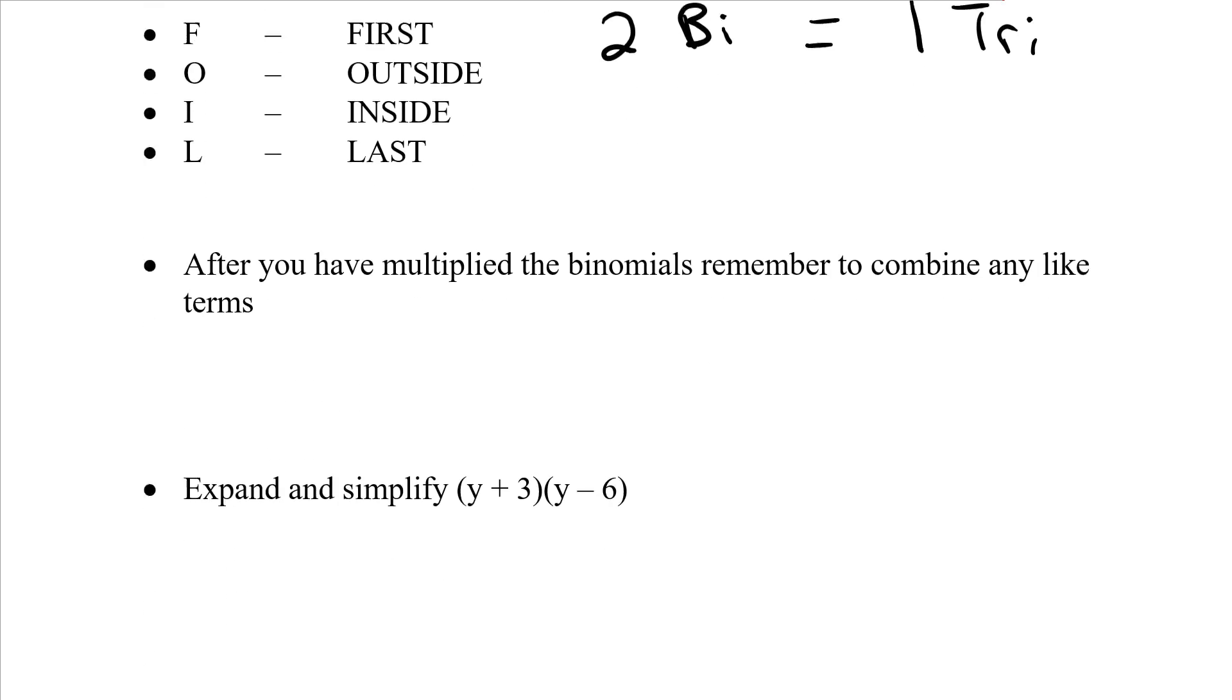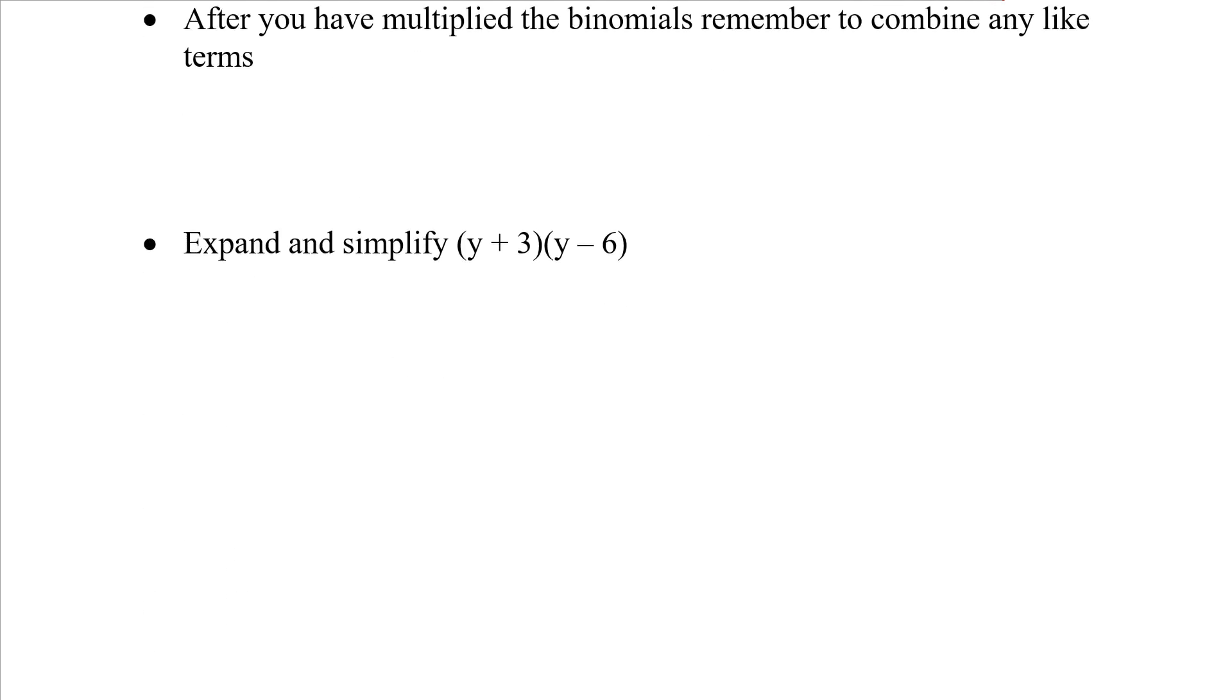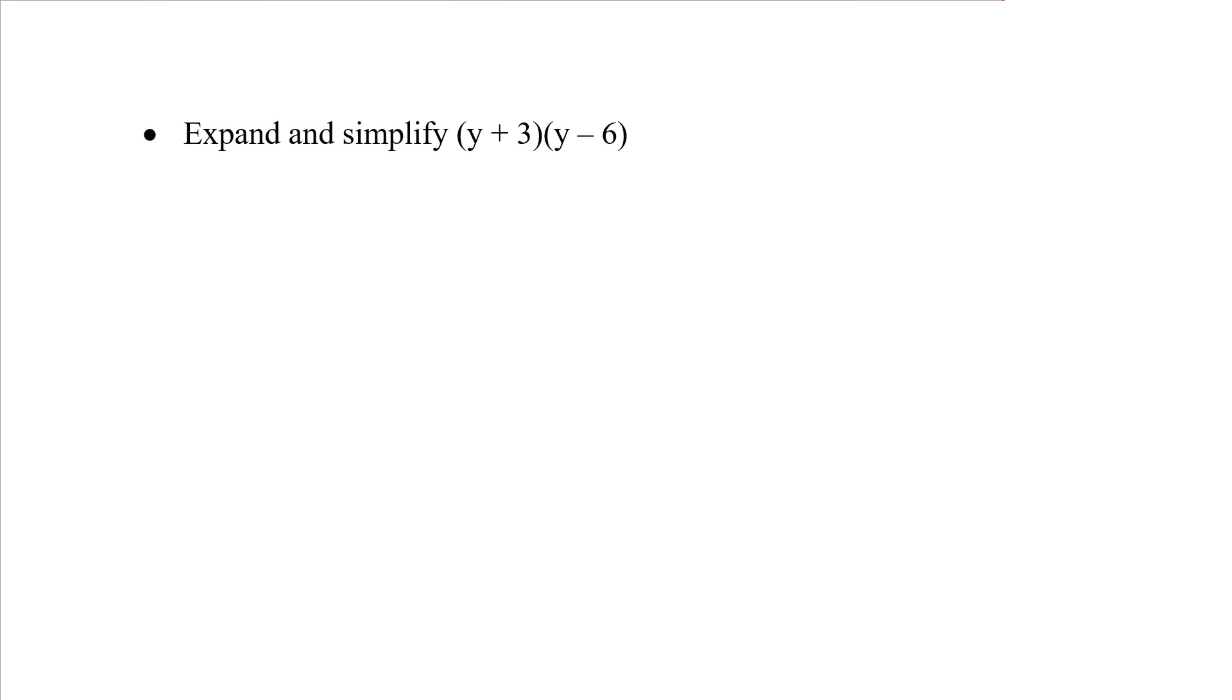Let's look at an example here. Simplify (y + 3)(y - 6). So again, I'm going to write down my memory device FOIL: first, outside, inside, last. I come to my binomials here and I'm going to take the first term in each binomial. I really like to draw on my question so I know exactly which terms I'm combining. So I'm going to have y times y.